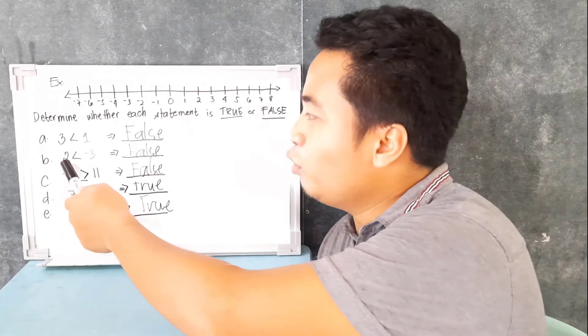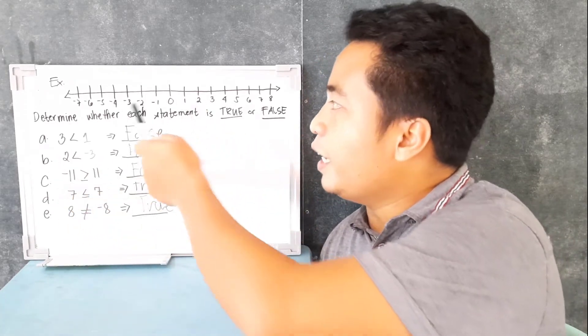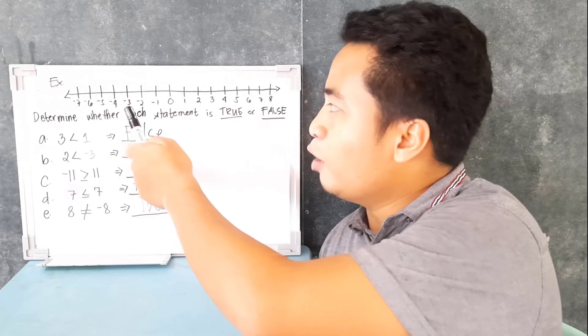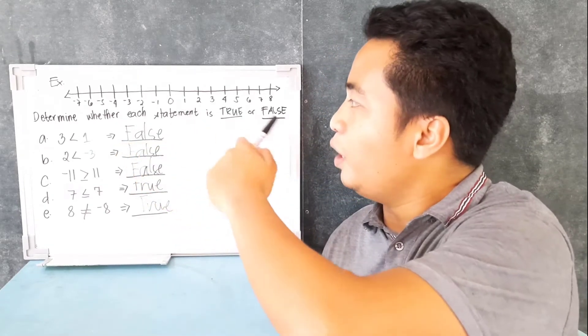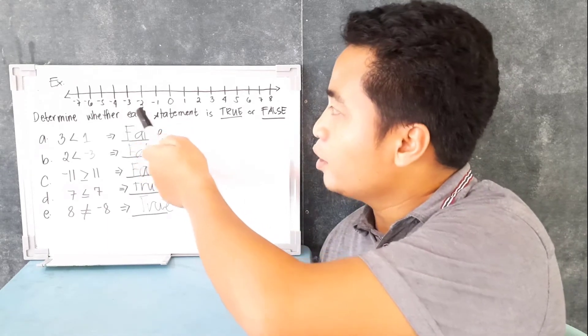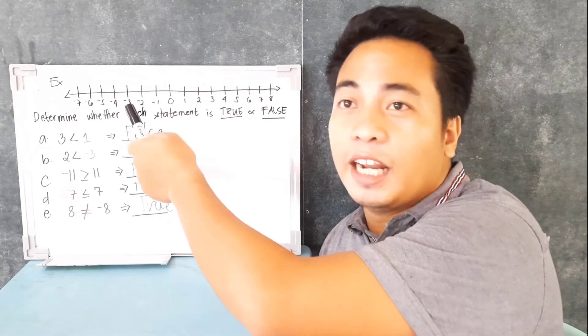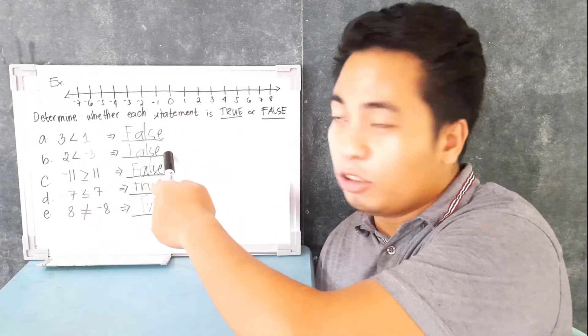Next example: 2 is less than negative 3. Where is 2 and negative 3? 2 is here and negative 3 is here. Now by looking at this number line, 2 is in the right side of negative 3. Therefore, 2 is supposedly greater than negative 3. So it is false.